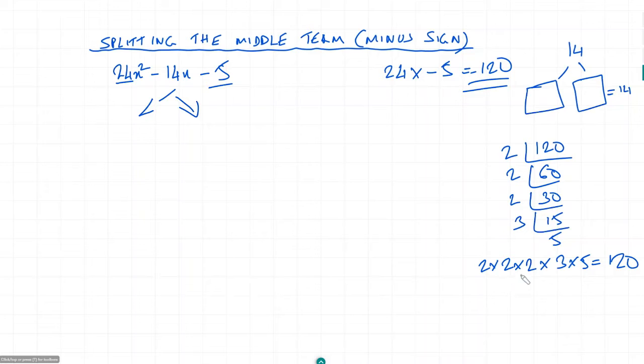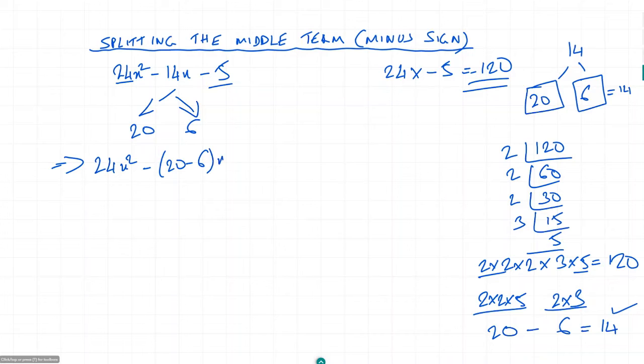The number is 14. We need 2 times 2 times 5 equals 20, and 2 times 3 equals 6. So 20 minus 6 equals 14. Now splitting: 24x² minus 20x plus 6x minus 5.